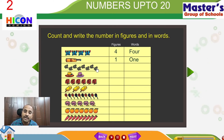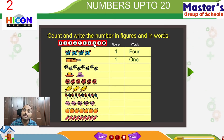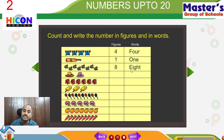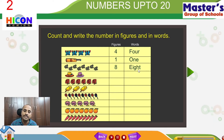So write the number 8. This is called the number 8, and this is the word form for 8: E, I, G, H, T — eight.